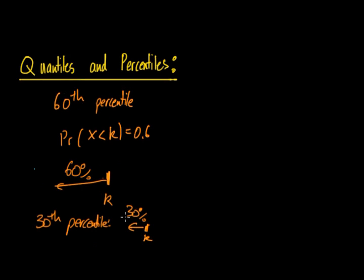So you have the 60th percentile, the 30th percentile. You can have the 75th percentile. That means that 25 percent of numbers are greater than it and of course 75 percent of numbers are less than it.